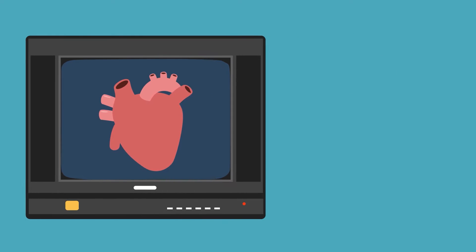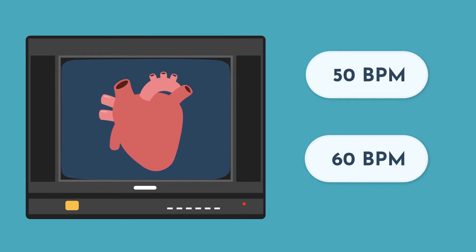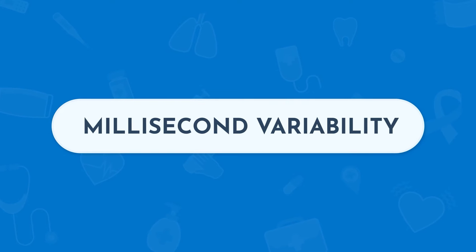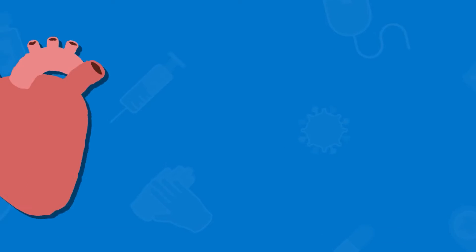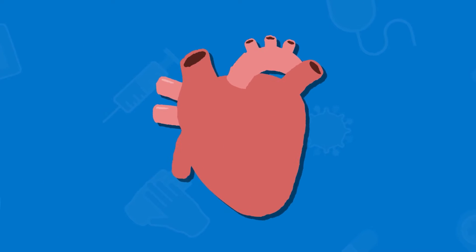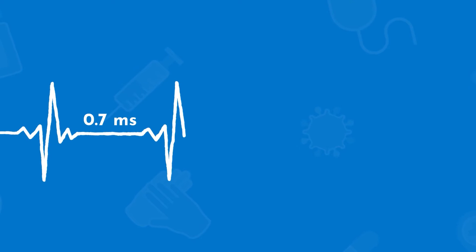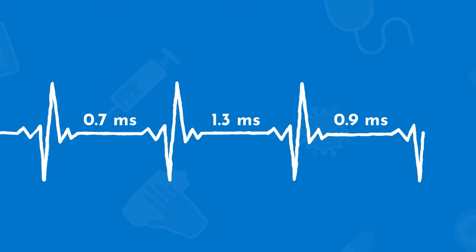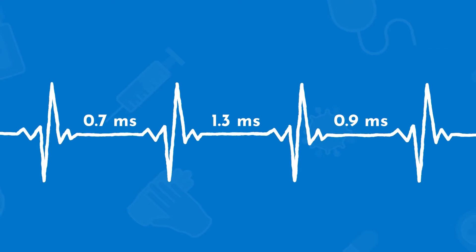We all have a heart rate — if you're listening to this, you're probably alive and your heart is probably beating. So 50 beats a minute, 60 beats a minute, whatever your number is, there is a certain cadence, a certain rhythm to your heartbeats. One of the cool things in cardiology that we follow is the millisecond variability in between each of those heartbeats. If you have a heart rate of 60 beats per minute, it's not exactly like a metronome firing every second — there can be these subtle millisecond differences. And that difference is what we call heart rate variability.